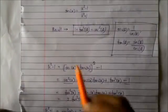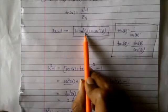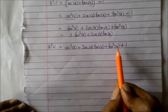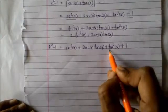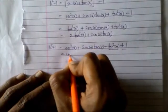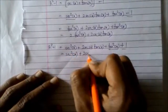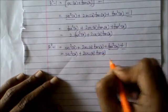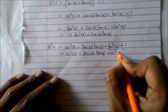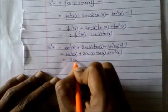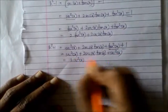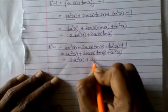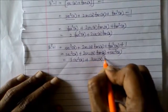Now let us go back to this formula: 1 + tan²θ = sec²θ. In this case I have 1 + tan²x, so these two terms are replaced by sec²x. So I can write sec²x + 2 sec x tan x + sec²x, which further simplifies to 2sec²x + 2 sec x tan x.